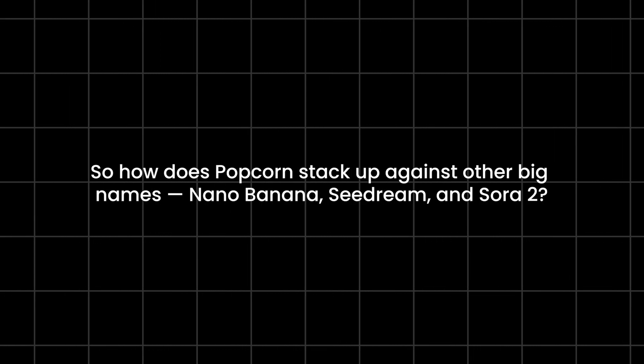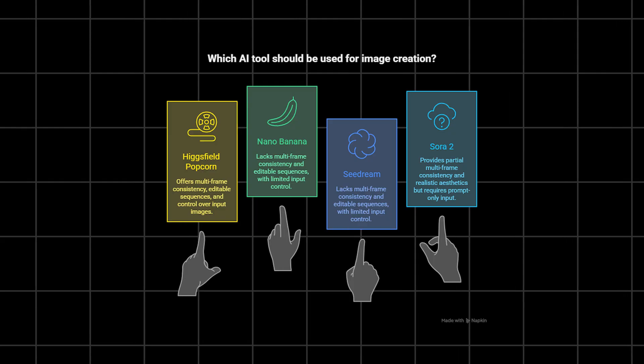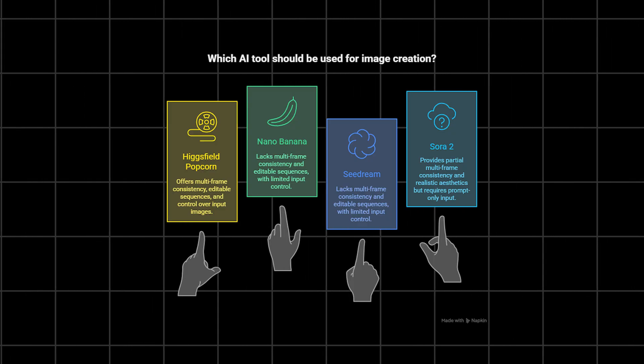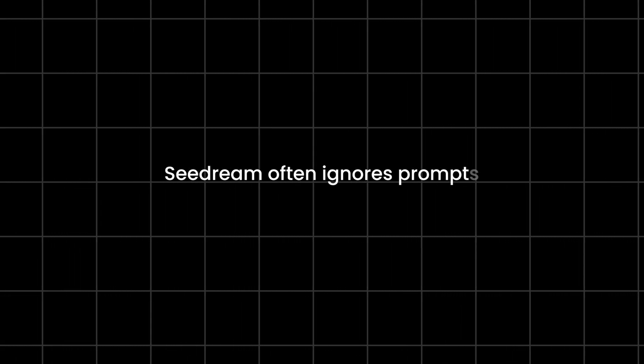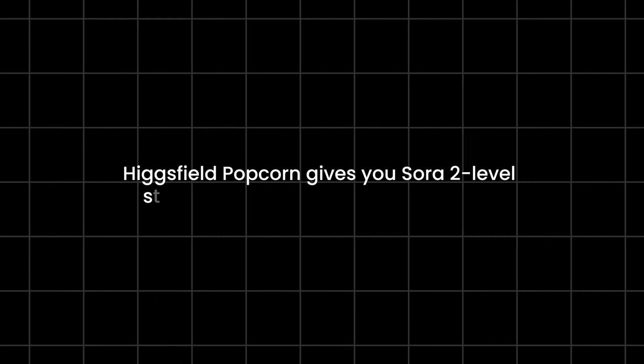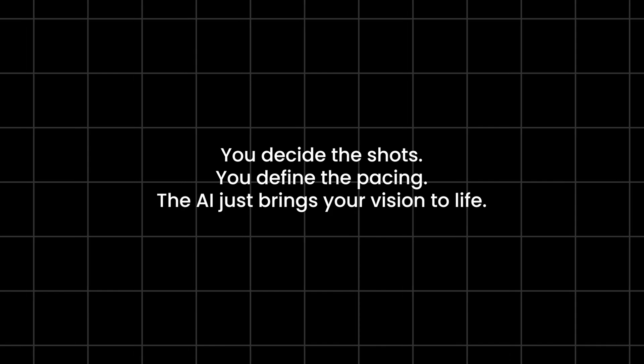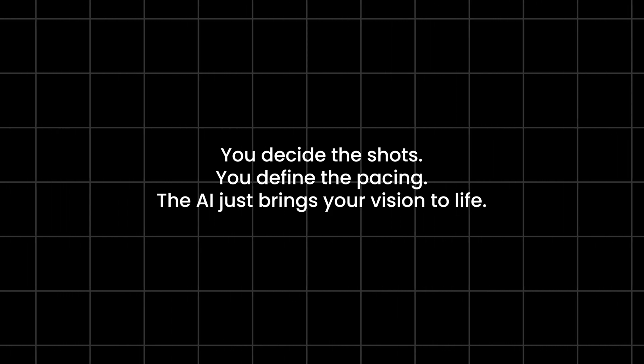So how does Popcorn stack up against other big names — Nano Banana, Sea Dream, and Sora 2? Nano Banana can't maintain faces or follow complex poses. Sea Dream often ignores prompts. Sora 2 is great for cinematic flow, but you can't control the specifics. Higgsfield Popcorn gives you Sora 2-level storytelling with full directorial control. You decide the shots. You define the pacing. The AI just brings your vision to life.